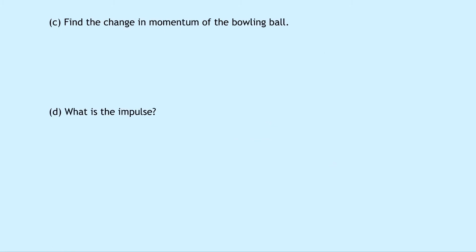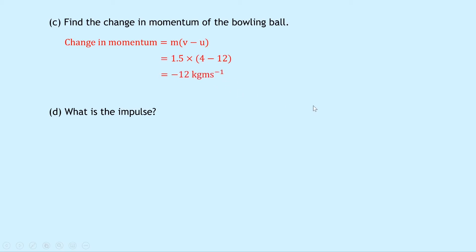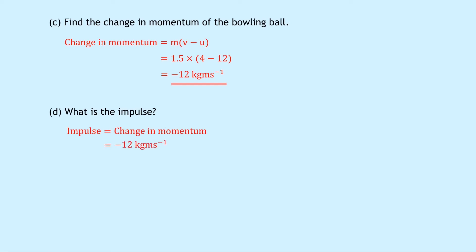Part C says to find the change in momentum of the bowling ball. Change in momentum equals MV minus MU, or M brackets V minus U. Substituting in the numbers we get 1.5 times (4 minus 12), which equals minus 12 kilogram meters per second. It's negative because the bowling ball is slowing down. Part D asks for the impulse. Impulse equals change in momentum, so the impulse is also minus 12 kilogram meters per second, or equivalently minus 12 newton seconds.